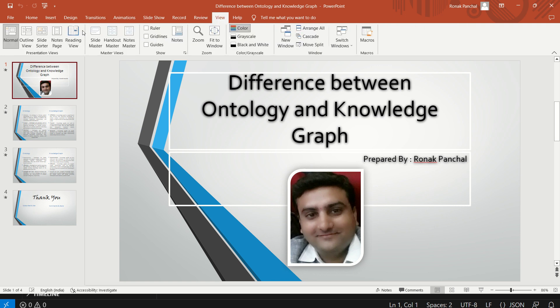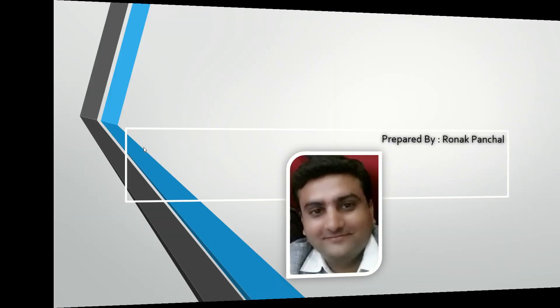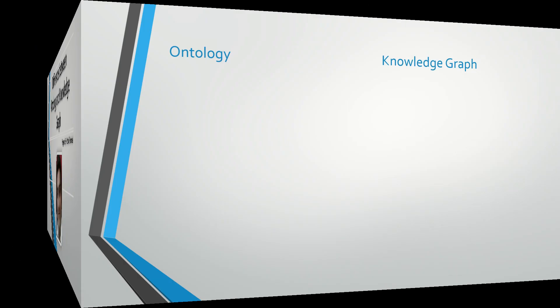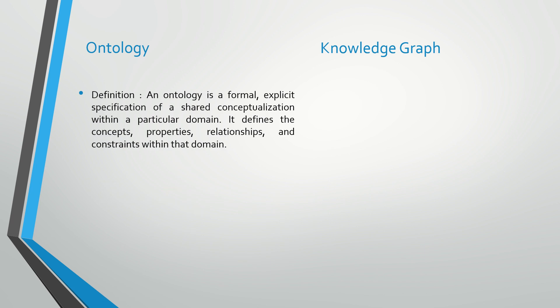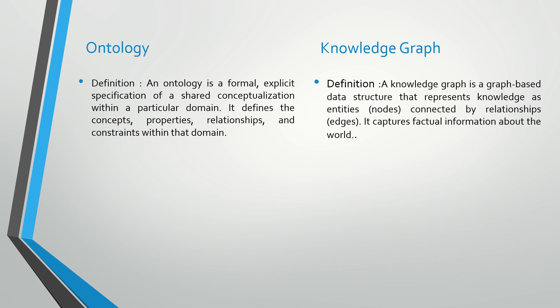Let's discuss the difference between ontology and knowledge graph. The definition of ontology is a formal explicit specification of a shared conceptual within a particular domain. It defines the concepts, properties, relationships, and constraints within that domain.